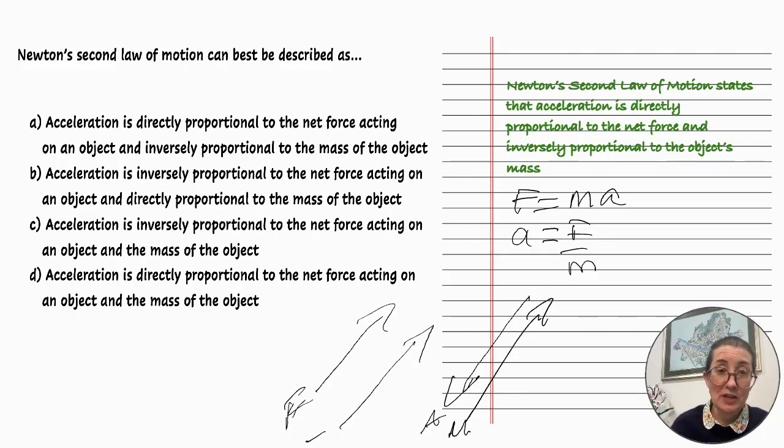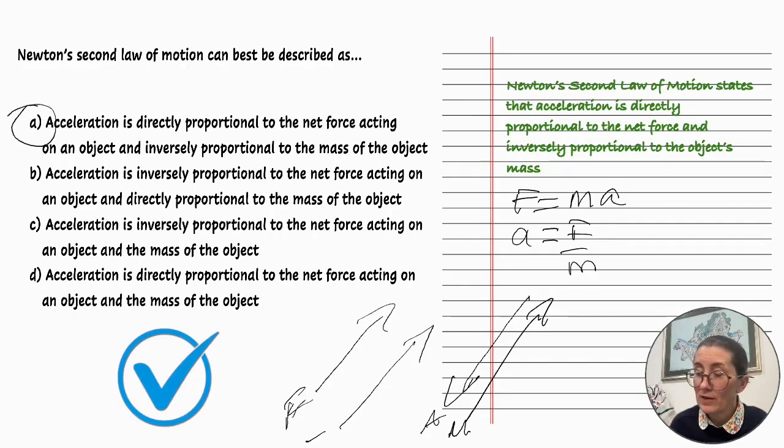So now let's look at the question and answers. Newton's second law of motion can best be described as: A is acceleration is directly proportional to the net force acting on an object and inversely proportional to the mass of the object. So right away we know that is the correct answer.